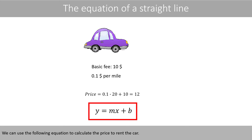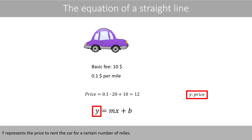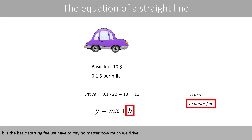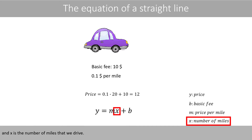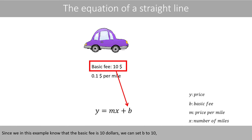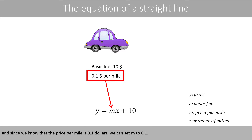We can use the following equation to calculate the price to rent the car. Y represents the price to rent the car for a certain number of miles. B is the basic starting fee we have to pay no matter how much we drive. M is the price per mile, and X is the number of miles that we drive. Since the basic fee is $10, we set B to $10. And since the price per mile is $0.1, we set M to $0.1.